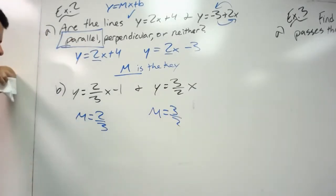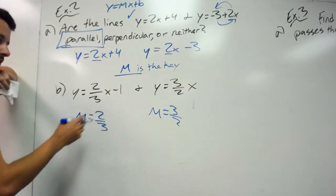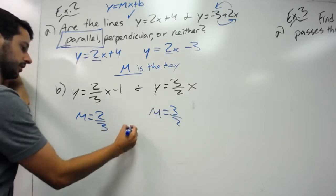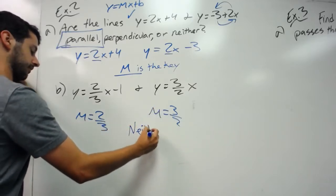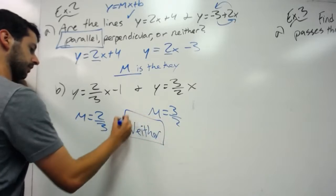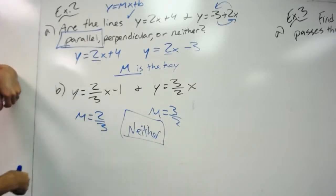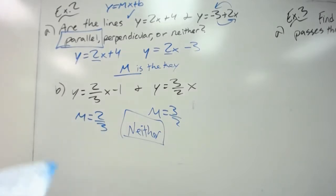They're not the same, so it's not parallel. They flipped numerator and denominator, but it did not switch the sign. Therefore, this would be neither. The perpendicular slope to 2 thirds would have been negative 3 over 2. You've just got to solve and find the slope.